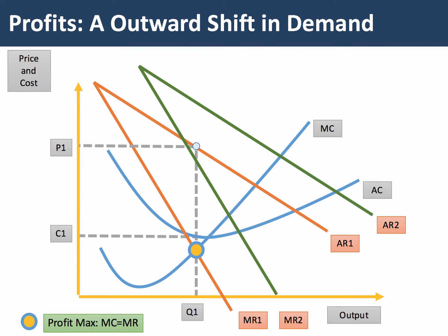So now we have a new set of revenue curves. We're going to assume that costs remain the same — there's no change in cost conditions. As a result, there's now a new profit maximising output where MR2 meets the marginal cost curve. That gives us a higher output Q2, and it also allows the firm to charge a higher price P2.